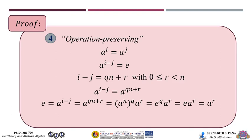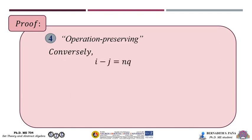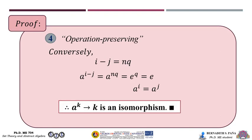Since n is the least positive integer such that a^n = e, we must have r = 0, so that n divides i − j. Conversely, if i − j = nq, then a^(i−j) = a^(nq) = e^q = e, so that a^i = a^j. Thus, f is operation preserving. Therefore, a^k → k is an isomorphism through Theorem 4.1.